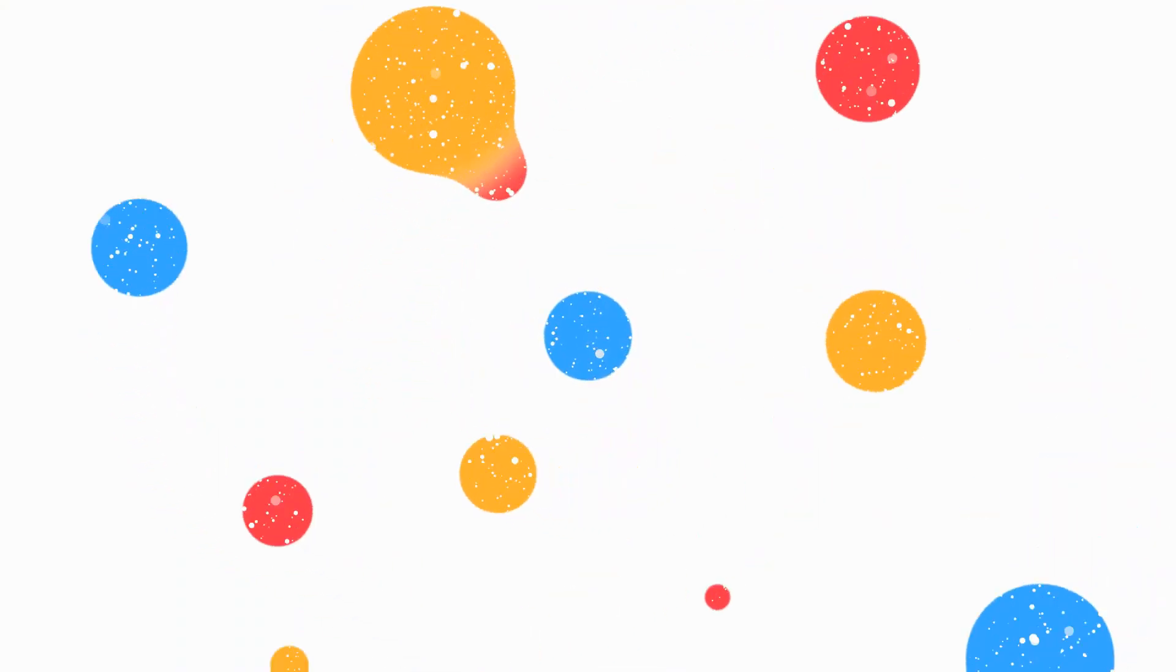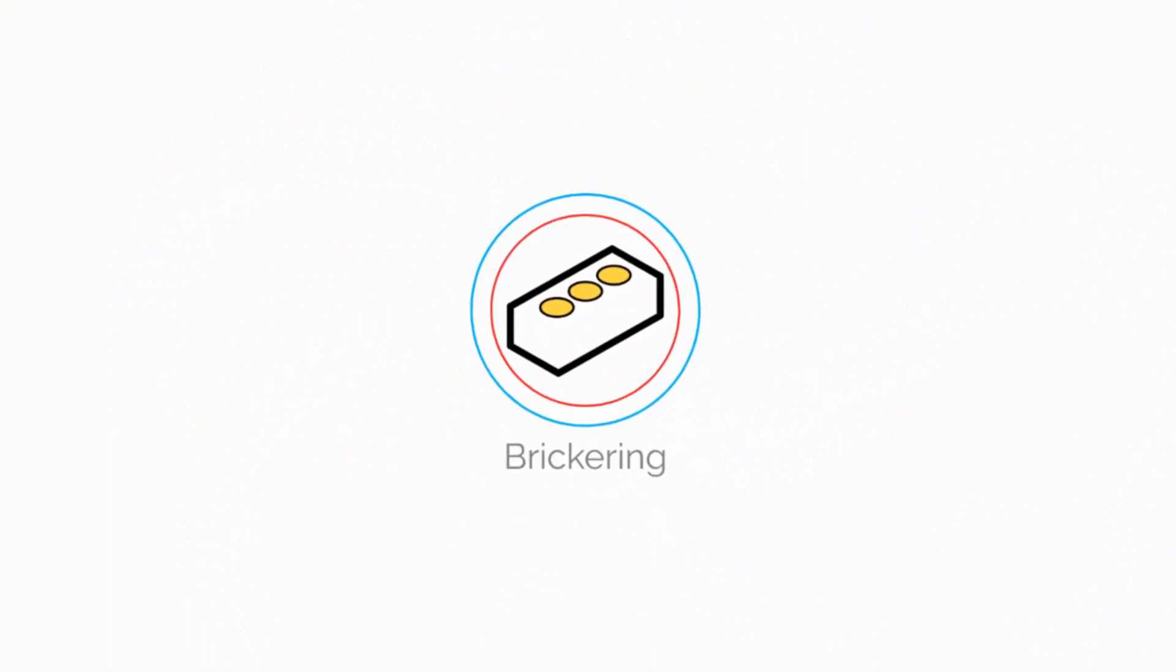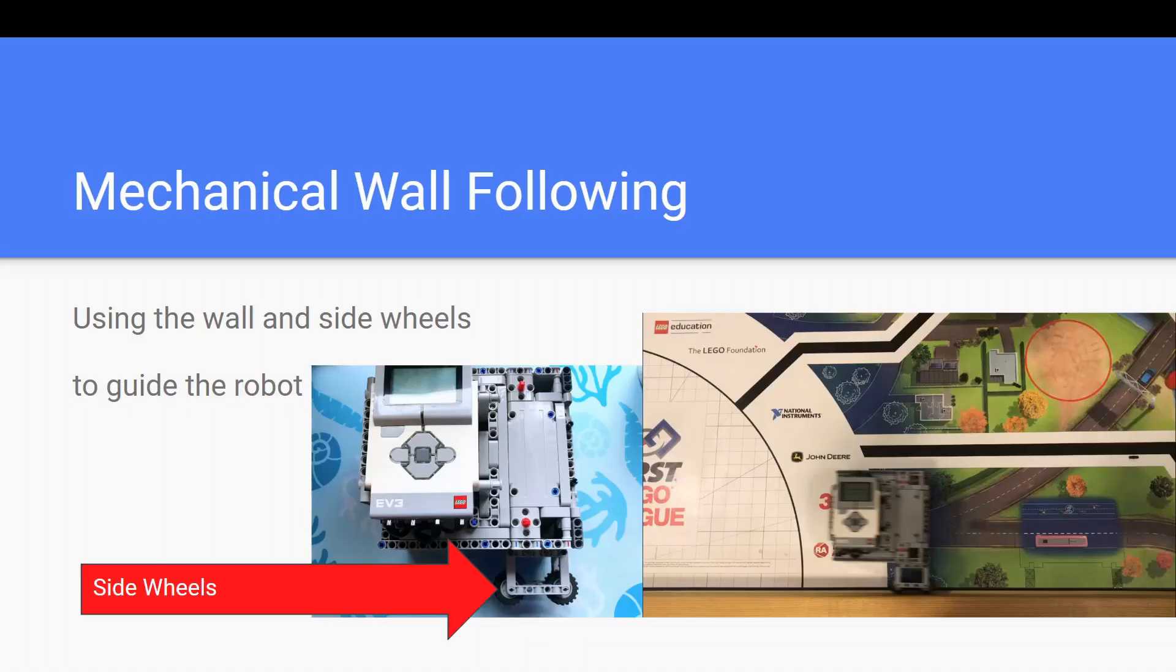Hey guys, today we're going to talk about mechanical wall following. Mechanical wall following is when a robot uses side wheels to travel along a wall, and it is really useful in helping the robot move accurately since the field's walls are generally straight.